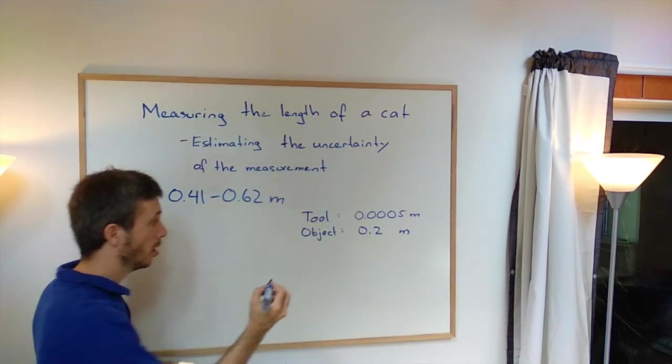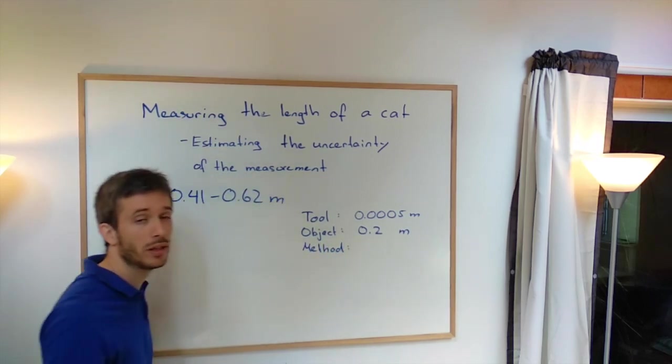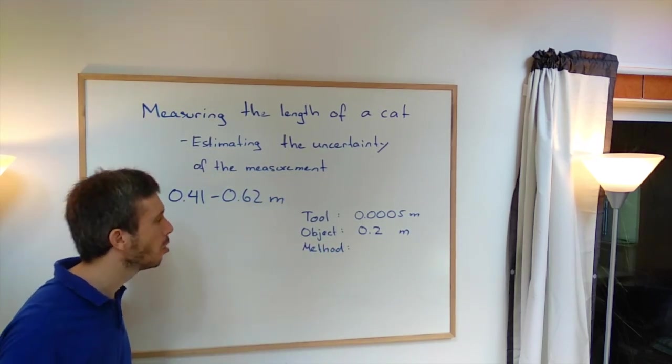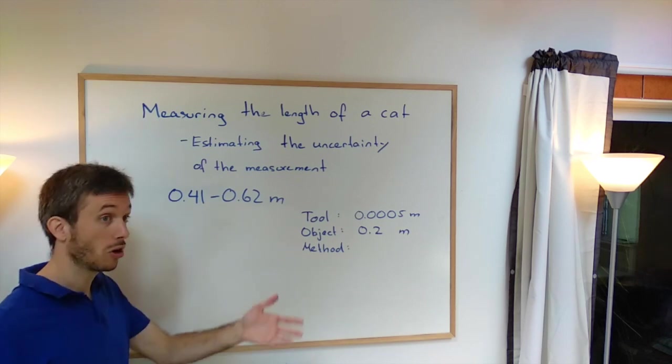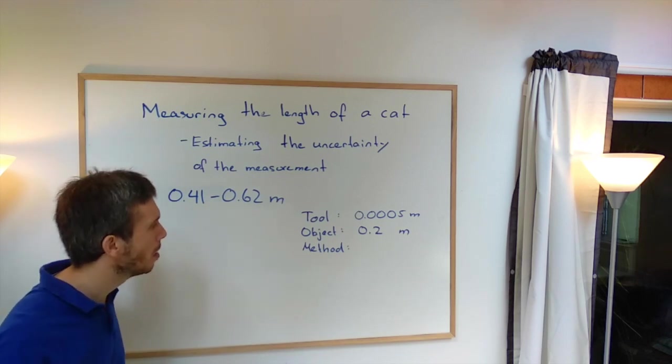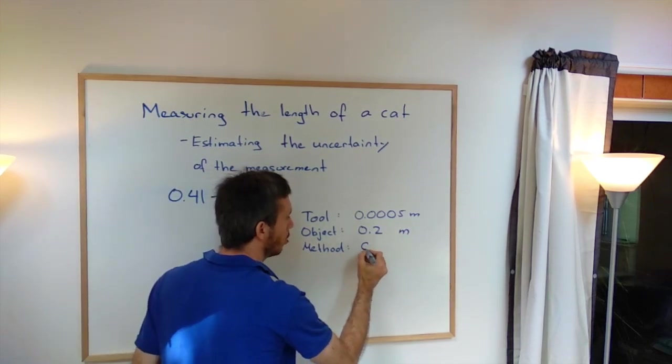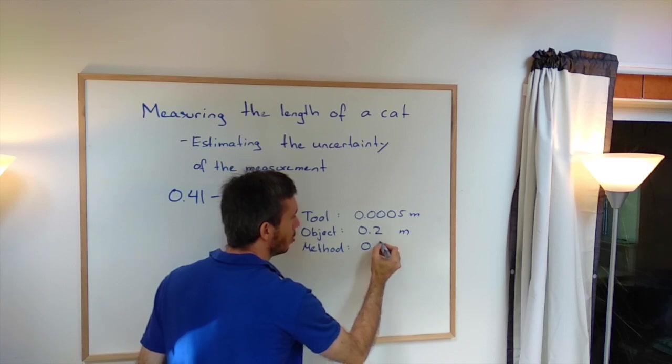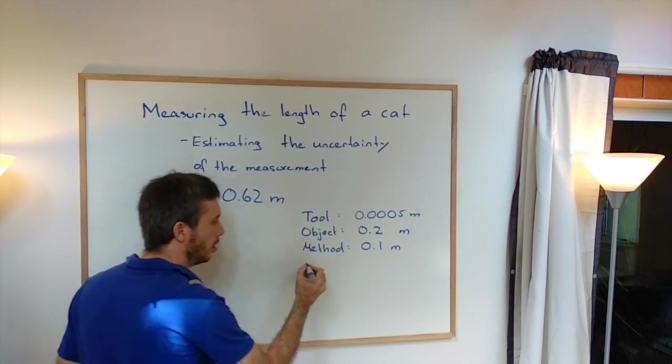Then, next one, the method I'm using. I was trying to run after the cat with the meter stick. Probably not the most precise way to do it. Maybe I could sedate the cat or drop her or try to measure her in her sleep. So I think I could have been off from the method by a good one, 10 centimeters, because maybe she was still a bit curved. And then finally,